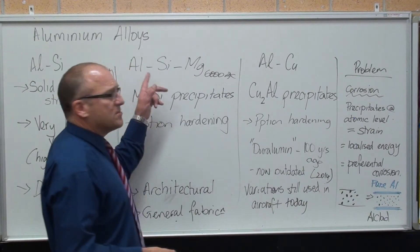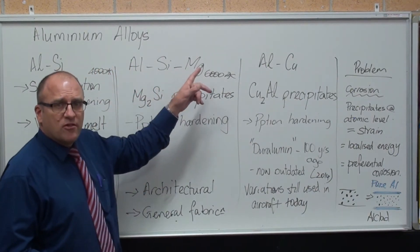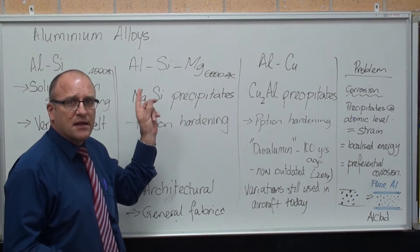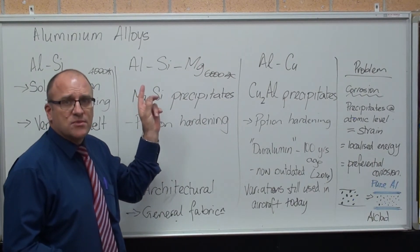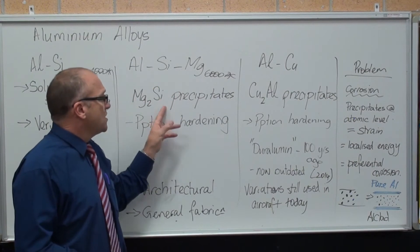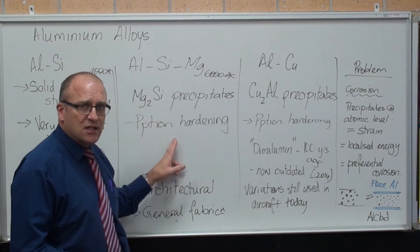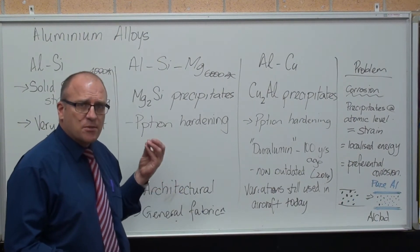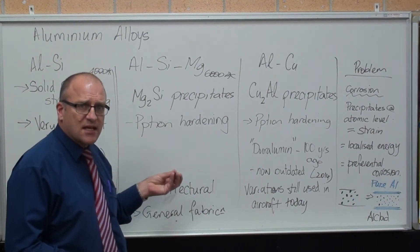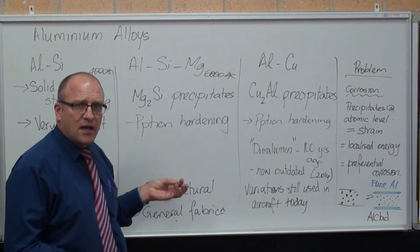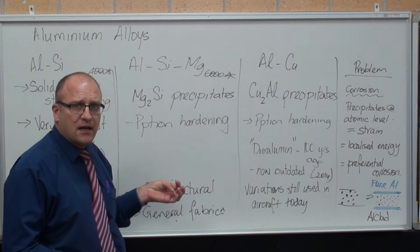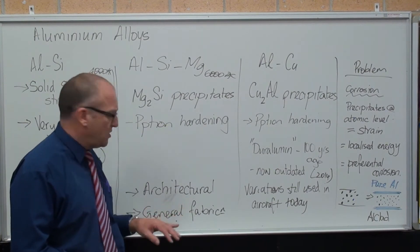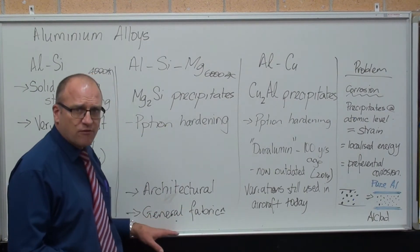Aluminium silicon alloys with a bit of magnesium behave differently. The magnesium forms magnesium silicide (Mg₂Si), and that magnesium silicide precipitation hardens the metal. The most common alloy is the 6000 series. If you buy aluminium off the shelf in a hardware store, it's 6000 series. It's used a lot in architectural applications and general fabrication.